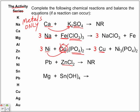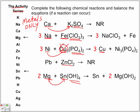Magnesium and tin(IV) hydroxide — we look for magnesium and tin in the activity series. Tin is lower, so magnesium, being higher up, will take tin's place, leaving tin lonely. Be careful when putting together your formulas using the crossover rule, and of course balance the equation.